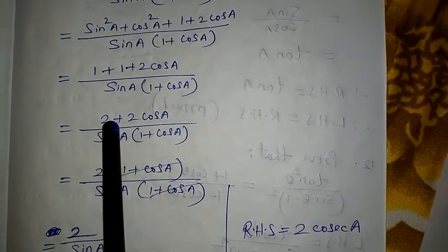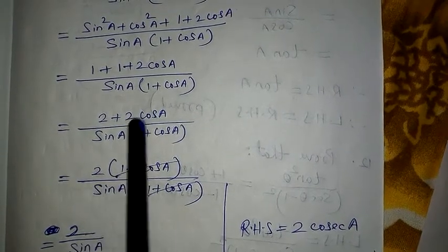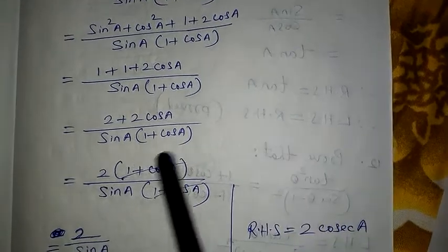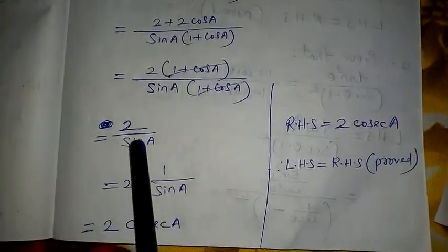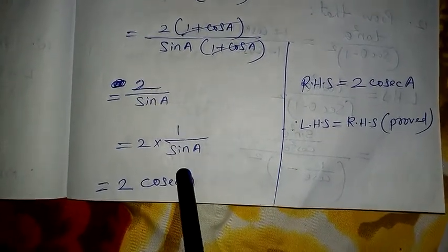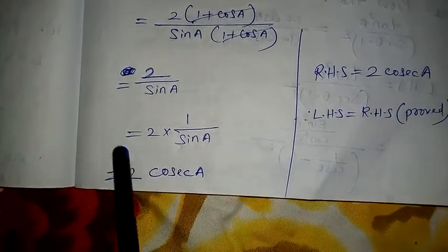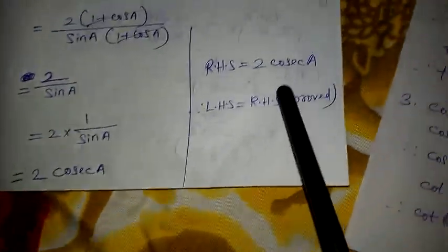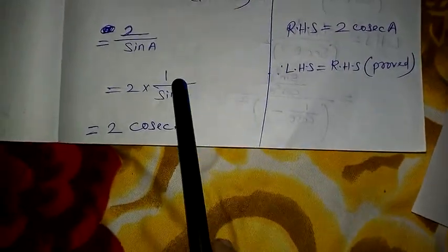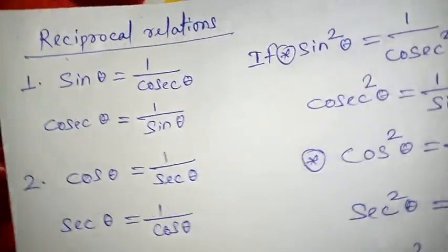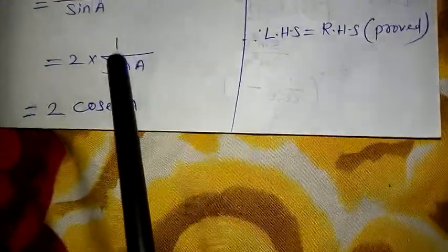If I take 2 common from the numerator, I get 2(1+cosA) over sinA(1+cosA). The (1+cosA) cancels top and bottom, leaving 2/sinA. Now, 1/sinA is cosecA, so I write 2 × (1/sinA) = 2cosecA. And since 1/sinθ = cosecθ, our answer is 2cosecA, which equals the RHS. Therefore LHS = RHS, proved.